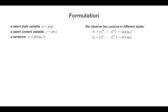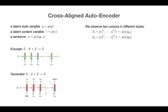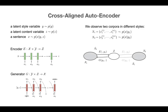Instead of using massive amounts of parallel data, we only assume access to two non-parallel corpora x1, x2 of different styles y1, y2, and we want to transfer between them. We learn an encoder e that encodes a sentence x to a style-independent content representation z, and a generator g that generates a sentence x from a given style y and content z. e and g form an autoencoder when applying to the same style, and form a transfer model when applying to different styles.